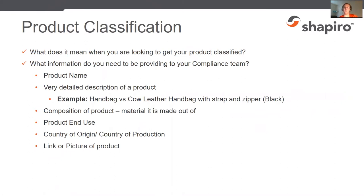To get a product classified, we need information from you. We need the product's name, or what you're going to be calling it as you're selling it, and a very detailed description. Just saying 'handbag' in an email isn't enough — but telling us it's a cow leather handbag with a strap and a zipper gives us much more to go off of.